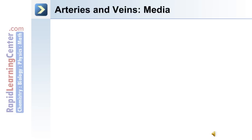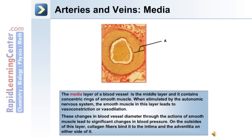The middle layer of a blood vessel is the media. It contains concentric rings of smooth muscle, and when stimulated by the autonomic nervous system, this smooth muscle leads to vasoconstriction or vasodilation of the blood vessel. These changes in blood vessel diameter lead to significant changes in blood pressure. On the outside of the media are collagen fibers which bind it to the intima and the adventitia on either side.